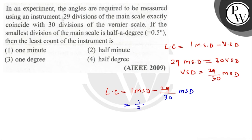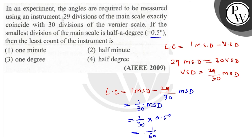So least count equals 1/30 MSD. Now, 1 MSD equals 0.5 degree. So 1/30 of 0.5 degree equals 0.5/30, which equals 1/60 degree. And 1/60 of a degree is 1 minute.